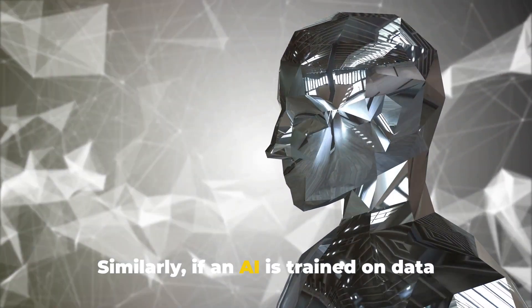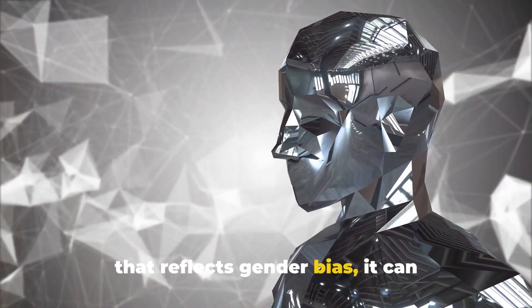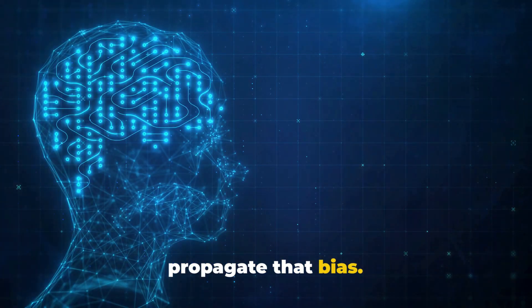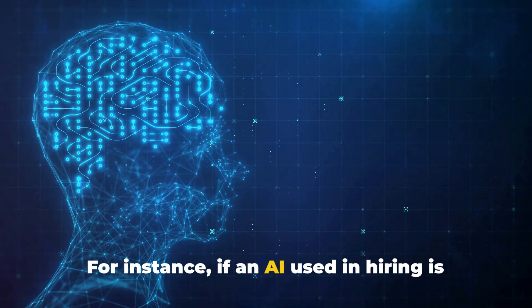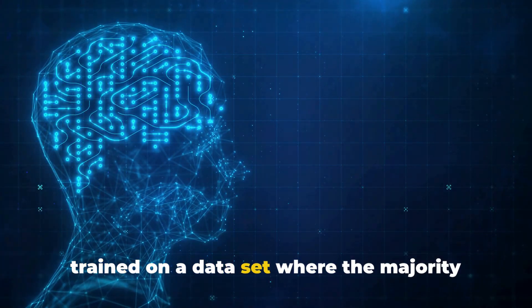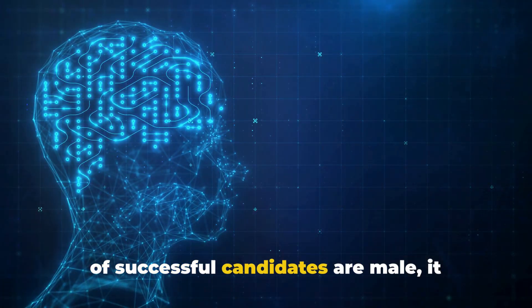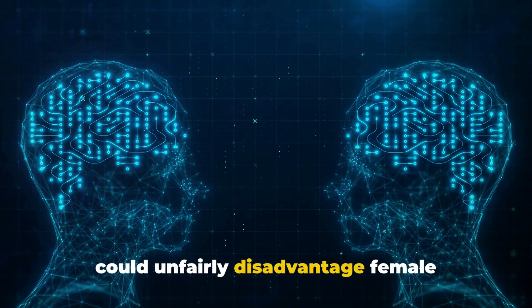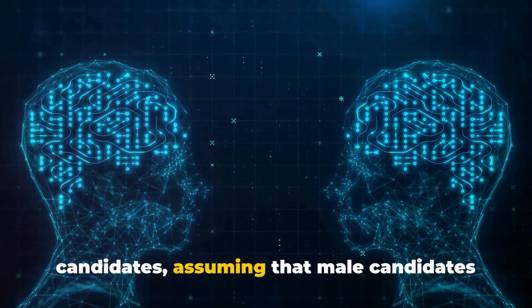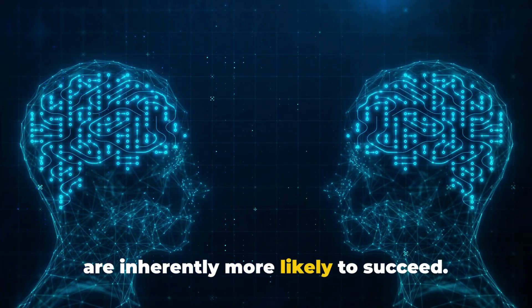Similarly, if an AI is trained on data that reflects gender bias, it can propagate that bias. For instance, if an AI used in hiring is trained on a dataset where the majority of successful candidates are male, it could unfairly disadvantage female candidates, assuming that male candidates are inherently more likely to succeed.